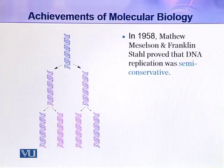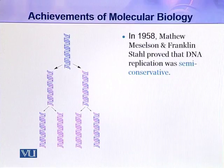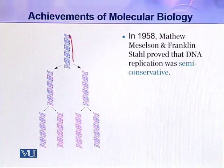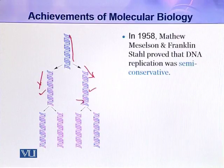The next important discovery was made in 1958 by Matthew Meselson and Franklin Stahl. They proved that the replication of a DNA molecule was semi-conservative. This addressed the important problem of how a DNA molecule replicates into two molecules and then into four. In this picture, you can clearly see that when a DNA molecule replicates, one strand goes to each new molecule. The blue strands are the parental strands, having come from the original DNA molecule.